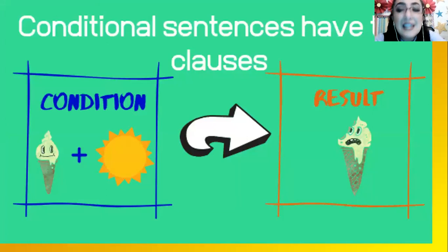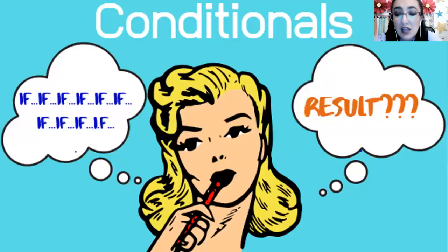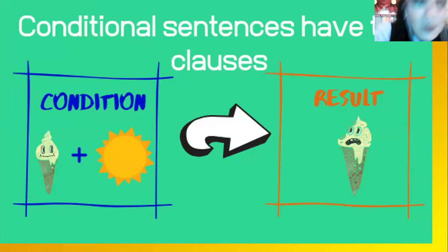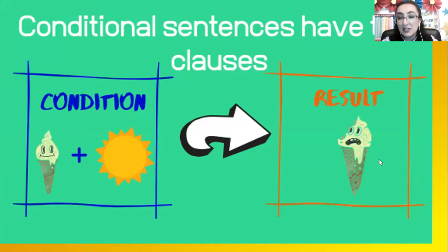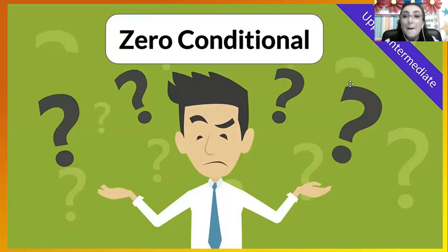The conditional sentences have two clauses: the condition and the result. We are going to be having a lot of conditionals — actually, only four: zero, first, second, third, and mixed conditionals. But for that reason, we are going to start first of all with our zero conditional. What is that? Zero conditional is when we are going to be talking about general truths, habits, real world, scientific facts, and so on. Remember that you are going to be having a condition and a result for that condition.